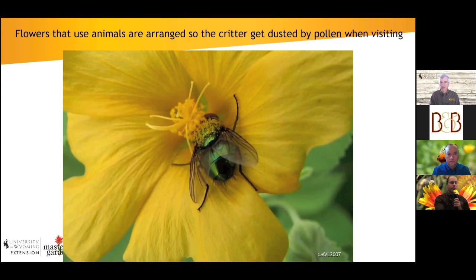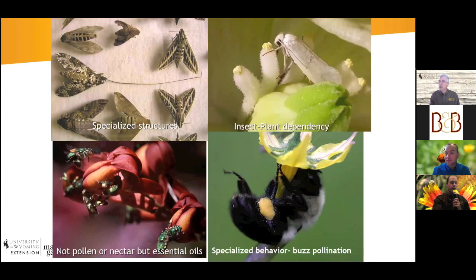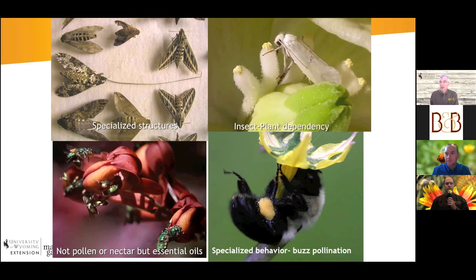We don't traditionally think of flies as pollinators, but they are. Especially in the mountainous regions of Wyoming, a lot of the pollination of little alpine flowers is done by flies. What we often refer to as filth flies utilize decaying organic matter for their larvae, but the adults feed on nectar at flowers. The highlight of this show is probably expanding knowledge on what actually classifies as a pollinator.